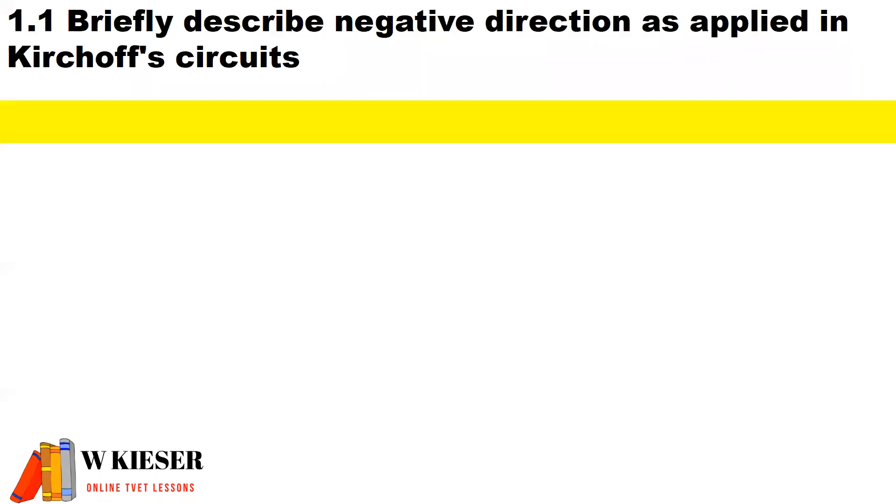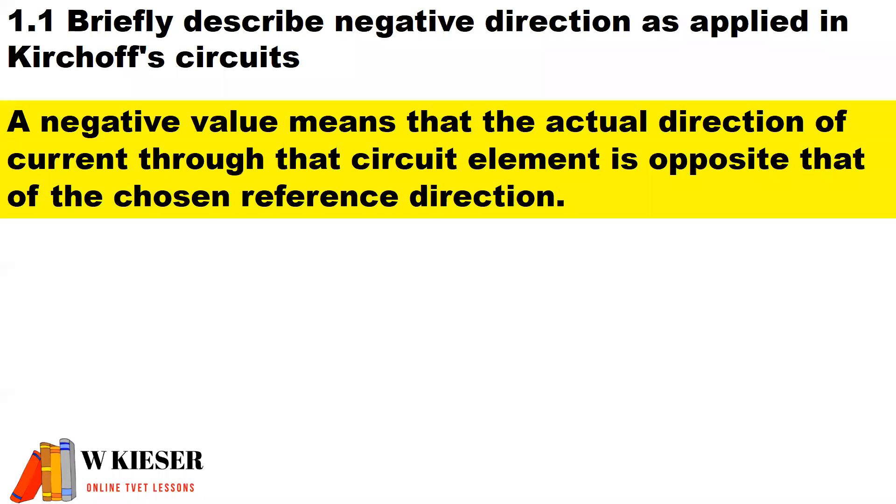In 1.1, briefly describe negative direction as applied in Kirchhoff circuits. A negative value means that the actual direction of current through that circuit element is opposite that of the chosen reference direction.